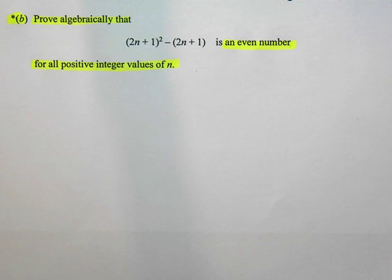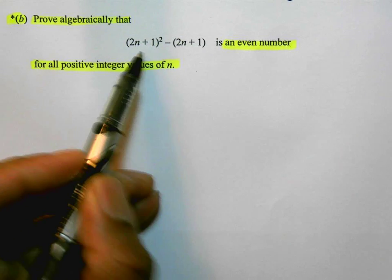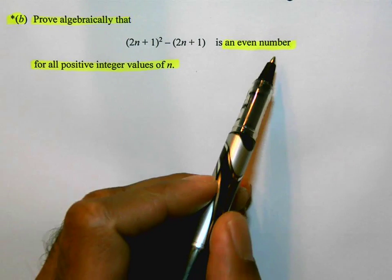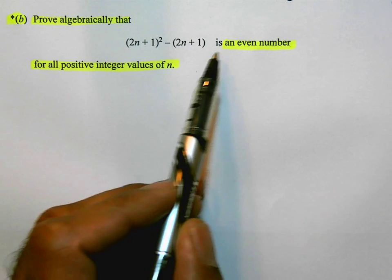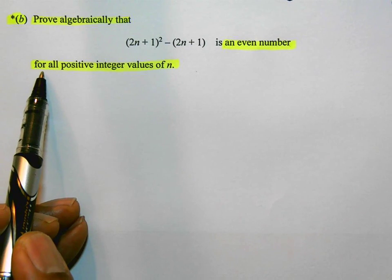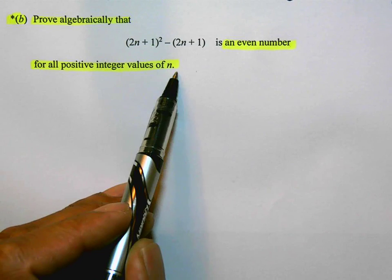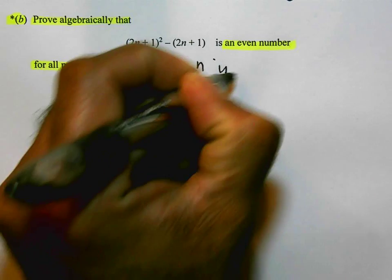What we need to do is to simplify this expression. Expand it out, tidy it up, and then think about how we can rearrange it or put it in a form to help us prove that it's always even for all positive integer values of n. So that means n is a positive whole number.